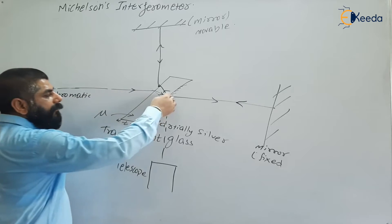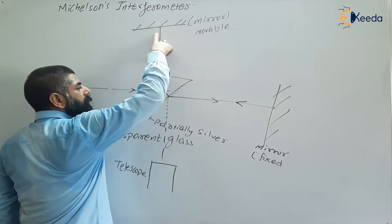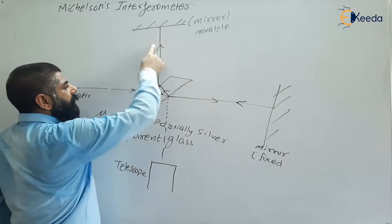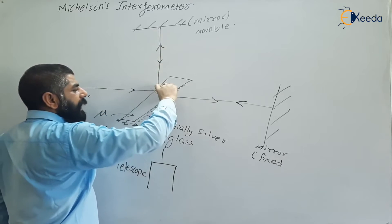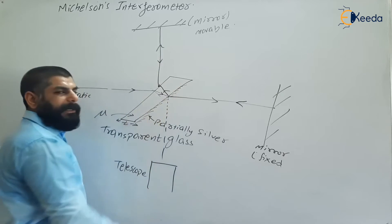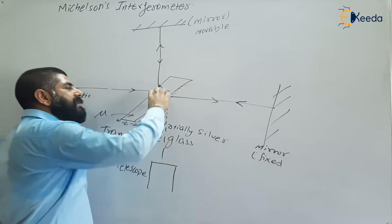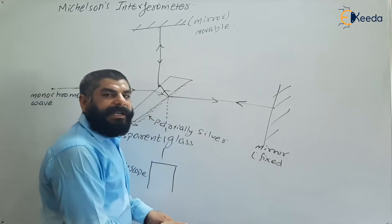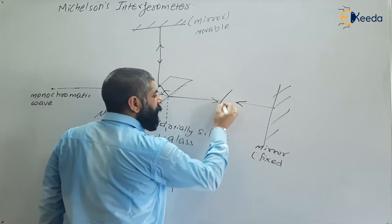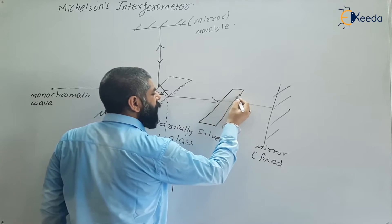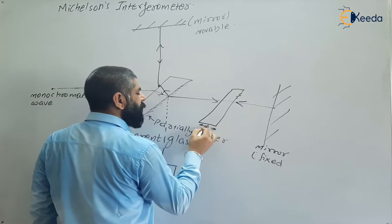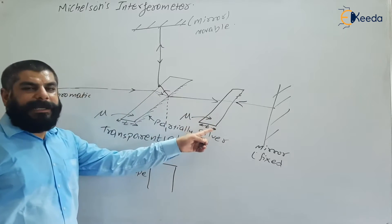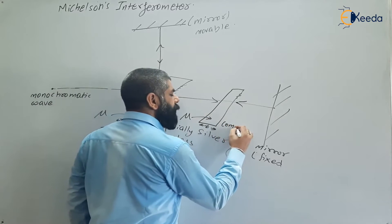We are interested in the path difference between these two waves. The reflected wave travels an extra path because of the beam splitter. To compensate for this path difference, another plate of the same thickness t and refractive index mu is placed in the other path. This is called the compensating plate.